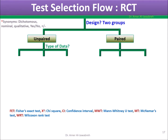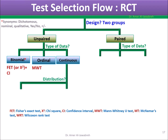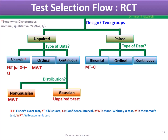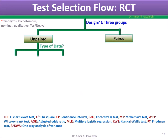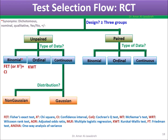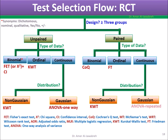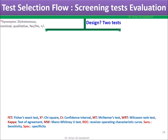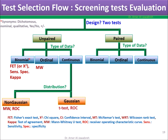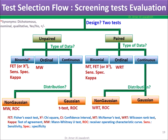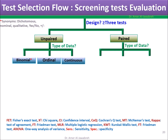For randomized clinical trials with two groups, three groups or more, screening test evaluation with two tests, and screening test evaluation with three or more tests, the selection flow similarly applies the four criteria.